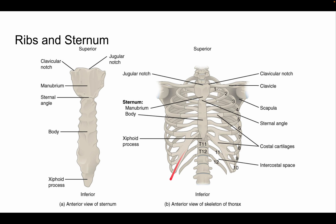Over here we have our floating ribs, which are quite small — even smaller than the more superiorly positioned ribs. The floating ribs are also classified as false ribs, and then we also have our sternum here.